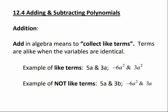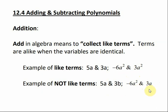Terms are alike whenever the variables are identical. Here are some examples of like terms: 5a and 3a — they have different coefficients, but the same variable. Negative 6a squared and 3a squared are also like terms because they have the same variable with the same exponent. Some examples of terms that are not alike are 5a and 3b — the variables are different.